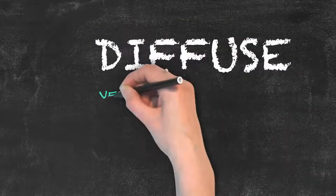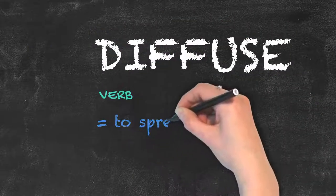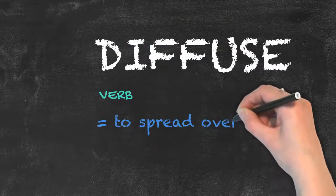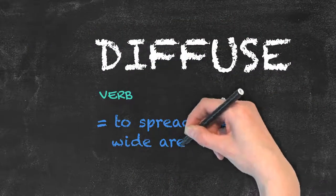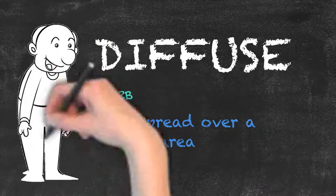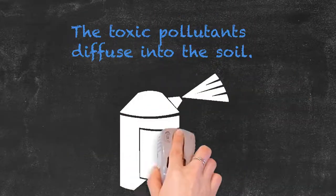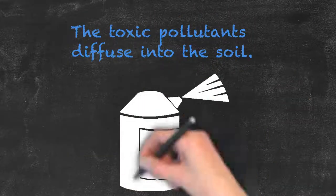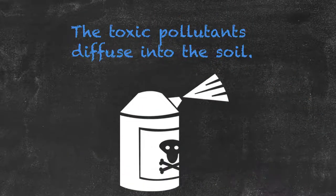Diffuse is also a verb, but means to spread over a wide area. An example sentence would be: the toxic pollutants diffuse into the soil.